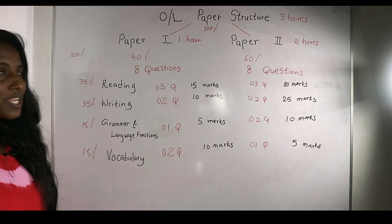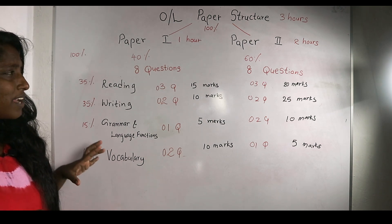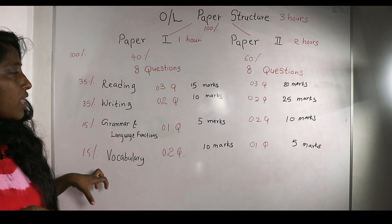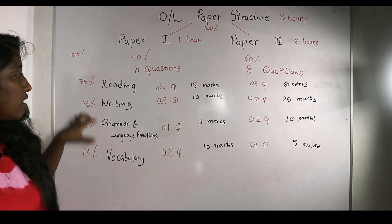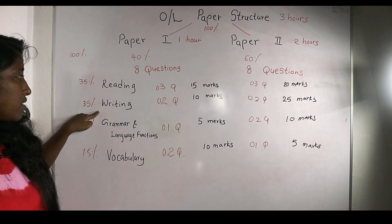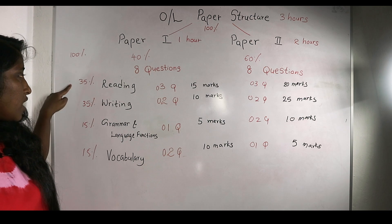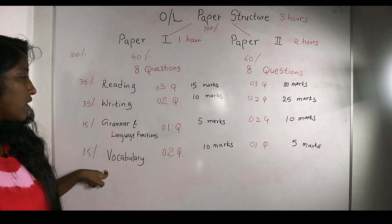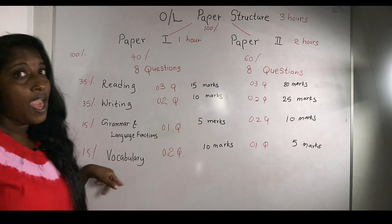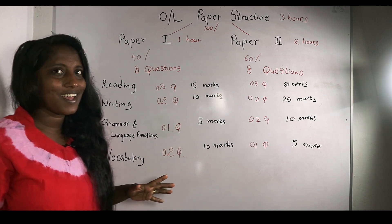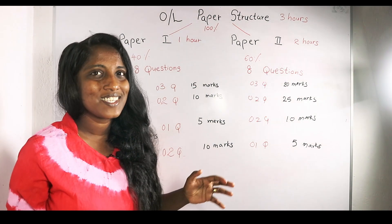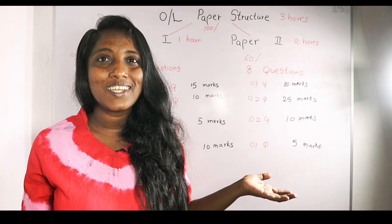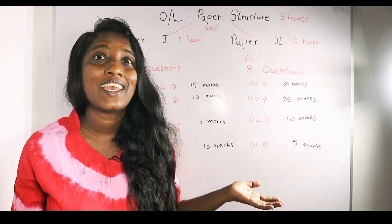I think you all can see the board and it is very clear how to gain the marks. Reading and writing together, vocabulary 75 marks. You can get an A.